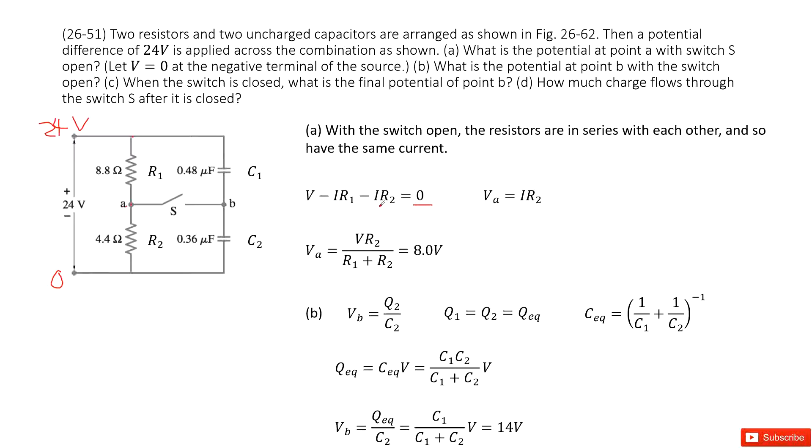And then we input the I inside, we get the V_A as V times R2 divided by R1 plus R2. Input given quantities, we get 8 volts.